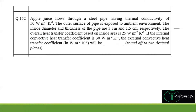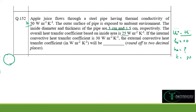Coming to question 152: apple juice flows through a steel pipe having thermal conductivity K = 50 W/(m·K). The outer surface is exposed to ambient. Inside diameter and thickness of the pipe are given. The overall heat transfer coefficient based on inside area, U_i = 25 W/(m²·K), and the internal heat transfer coefficient H_i = 30 W/(m²·K). We must find H_o, the external heat transfer coefficient. Let's draw the diagram for a better understanding.